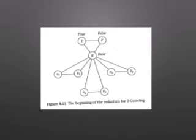In any three-coloring of G, the nodes vi and vi bar must get different colors and both must be different from base. In any three-coloring of G, the nodes true, false, and base must get all three colors in some permutation.